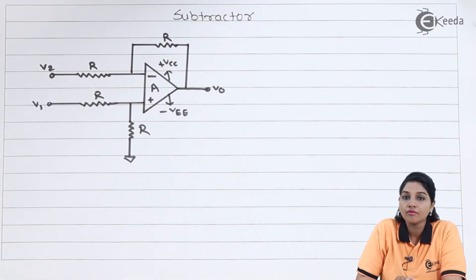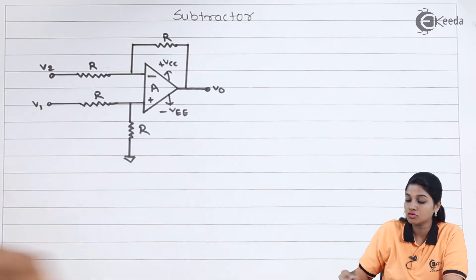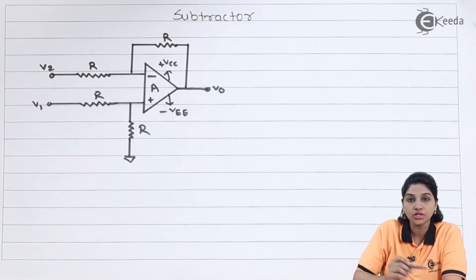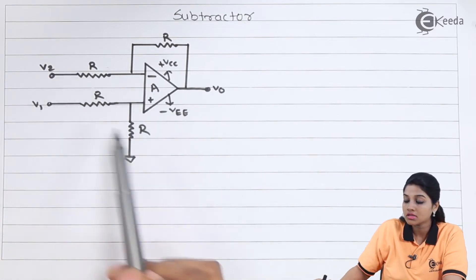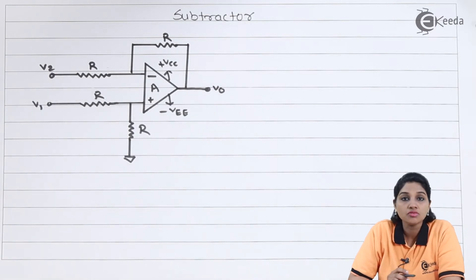In the circuit diagram, we are having two inputs V1 and V2 applied to the non-inverting and inverting terminal of the op-amp. All the resistors having the same value, that means value of R.